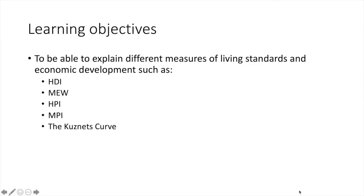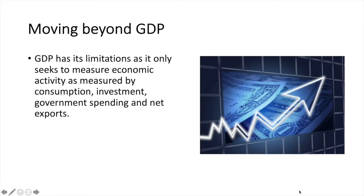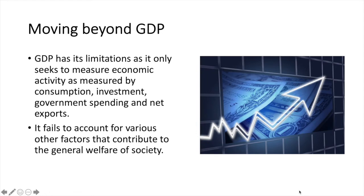In this video we'll cover 5 different measures of living standards and economic development, including HDI, the measure of economic welfare, the human poverty index, the multi-dimensional poverty index, and the Kuznets curve. The reason we need to look beyond GDP is that GDP has some significant limitations as a measure of the development of a country. It really only tells us about the value of goods and services produced and doesn't take into account various other factors that contribute to the general welfare of society.